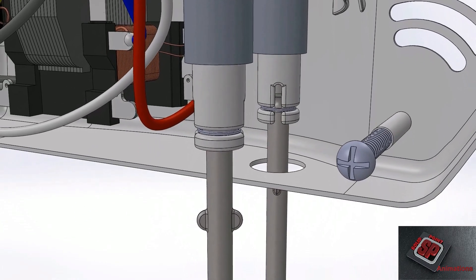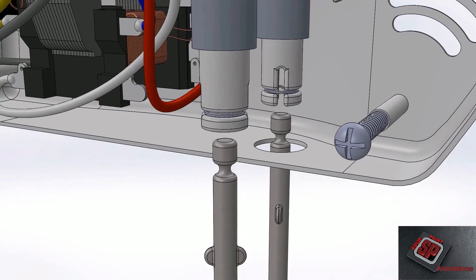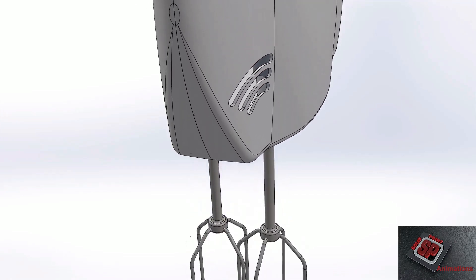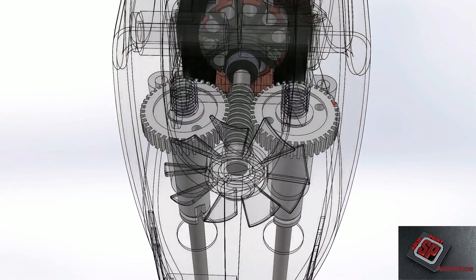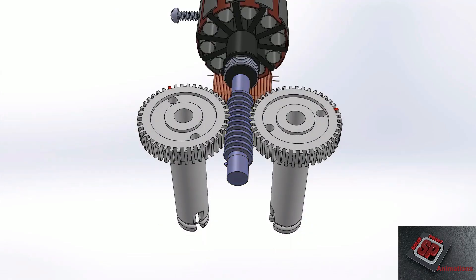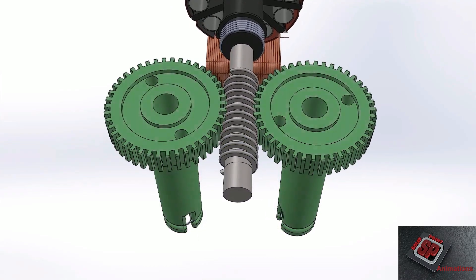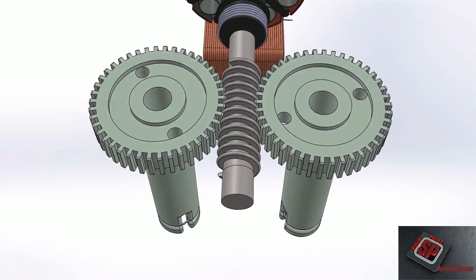At this point, nothing is holding the beaters up any longer and they will fall into the sink. Now let's look at what spins the beaters. Here are the worm and pinion gears of the hand mixer. This is the worm gear, and these are the pinion gears. The pinion gears are on opposite sides of the worm gear.